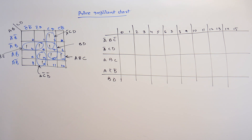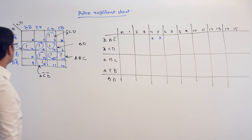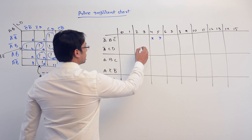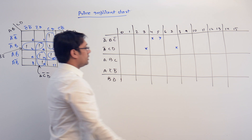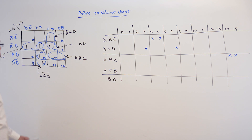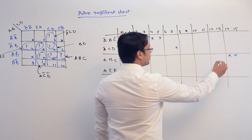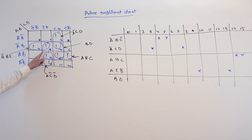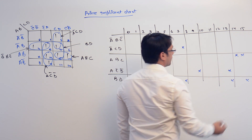The first subcube, A complement, B, C complement, is covering the terms 4 and 5. The subcube A complement, C, D is covering the terms 3 and 7. A, B, C is covering the terms 14 and 15. A, C complement, D complement is covering 13 and 9. And B, D is covering 5, 7, 13, and 15.